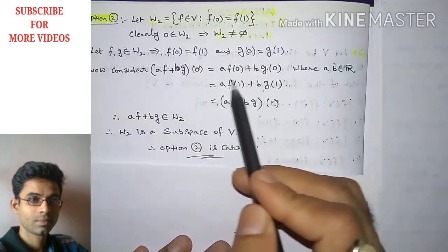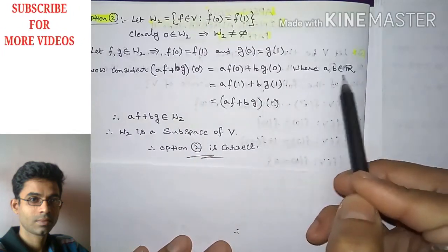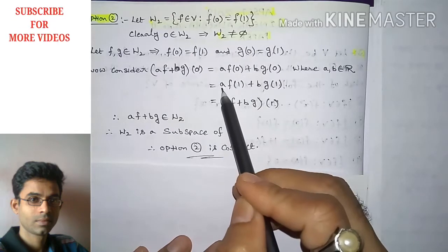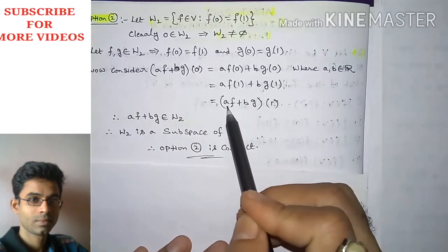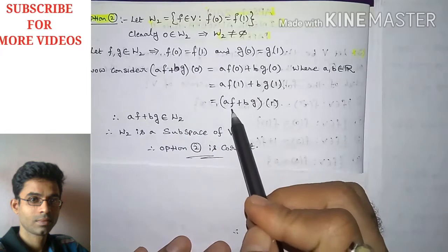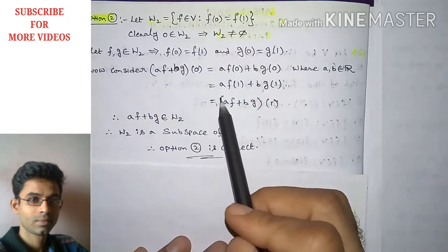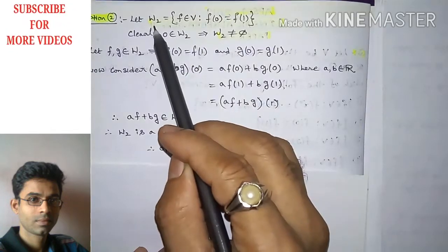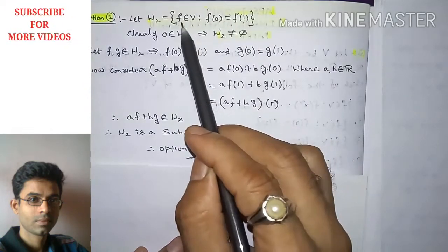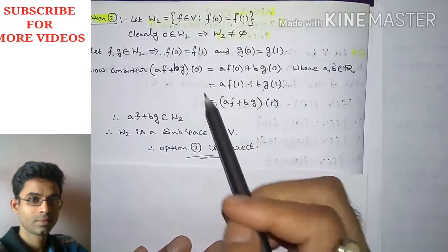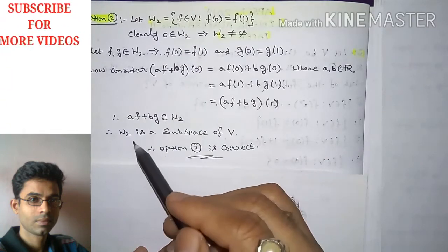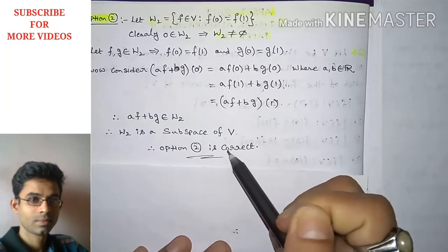We have (af + bg)(0) = a·f(0) + b·g(0), where a and b are scalars in R. Since f(0) = f(1) and g(0) = g(1), this equals a·f(1) + b·g(1), which equals (af + bg)(1). So (af + bg)(0) = (af + bg)(1), which satisfies the defining property of W₂. Therefore af + bg belongs to W₂, and W₂ is a subspace of V.